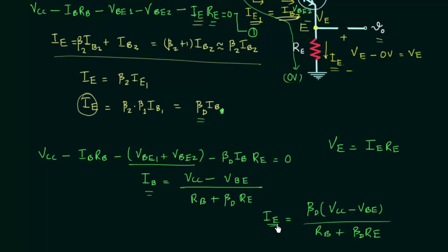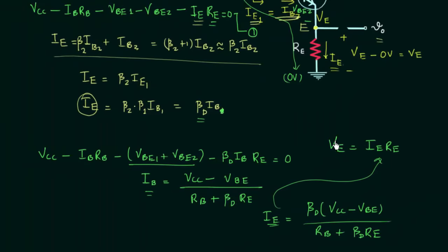The output voltage VE is simply equal to IE·RE, the drop across resistance RE. Once you calculate the emitter current IE using this expression and substitute it, you will have the output voltage. I will upload the notes on AC analysis to the website instead of a separate lecture. That's all for this lecture — see you in the next one.